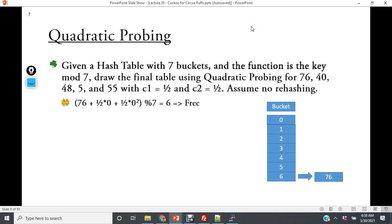First we get 76, and the first iteration will be 0, so this really just becomes 76 mod 7. That value is free. We do the same thing with 40.